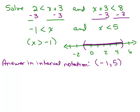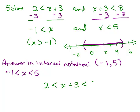In compact form, this is saying negative 1 is less than x is less than 5, which in interval notation is (-1, 5). Now let's take the original problem — 2 is less than x plus 3 and x plus 3 is less than 8 — and write it in compact form: 2 is less than x plus 3 is less than 8.